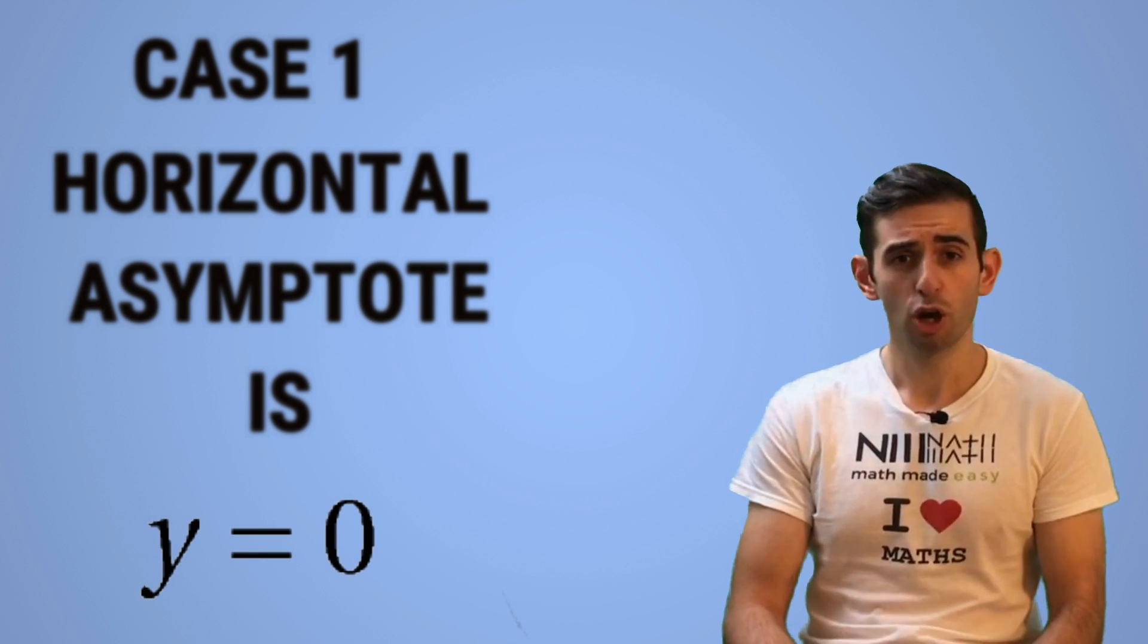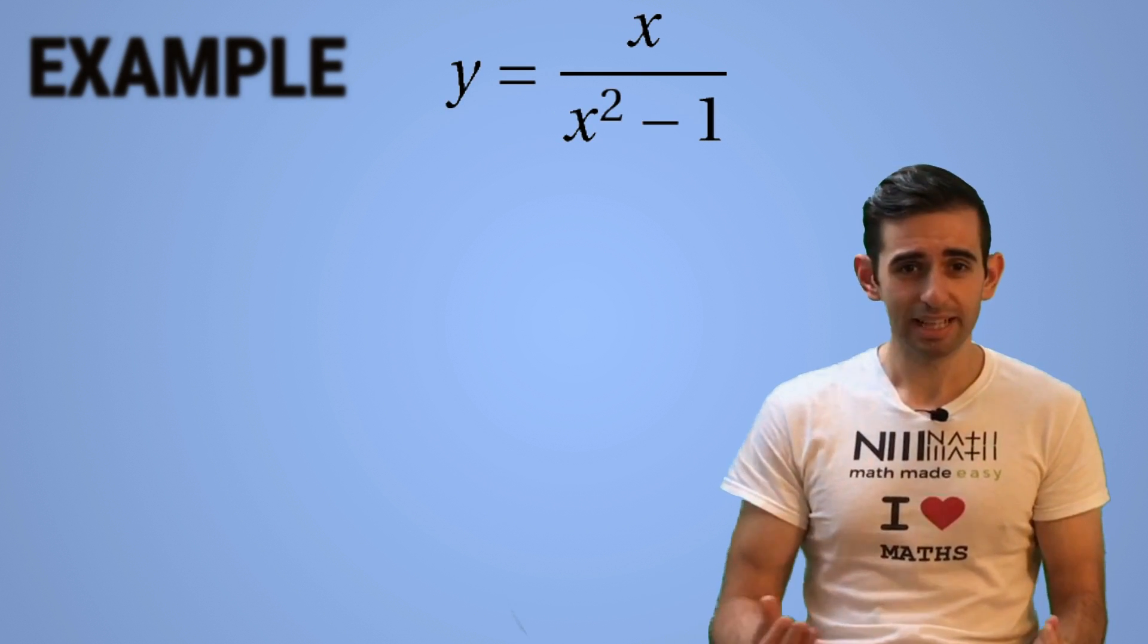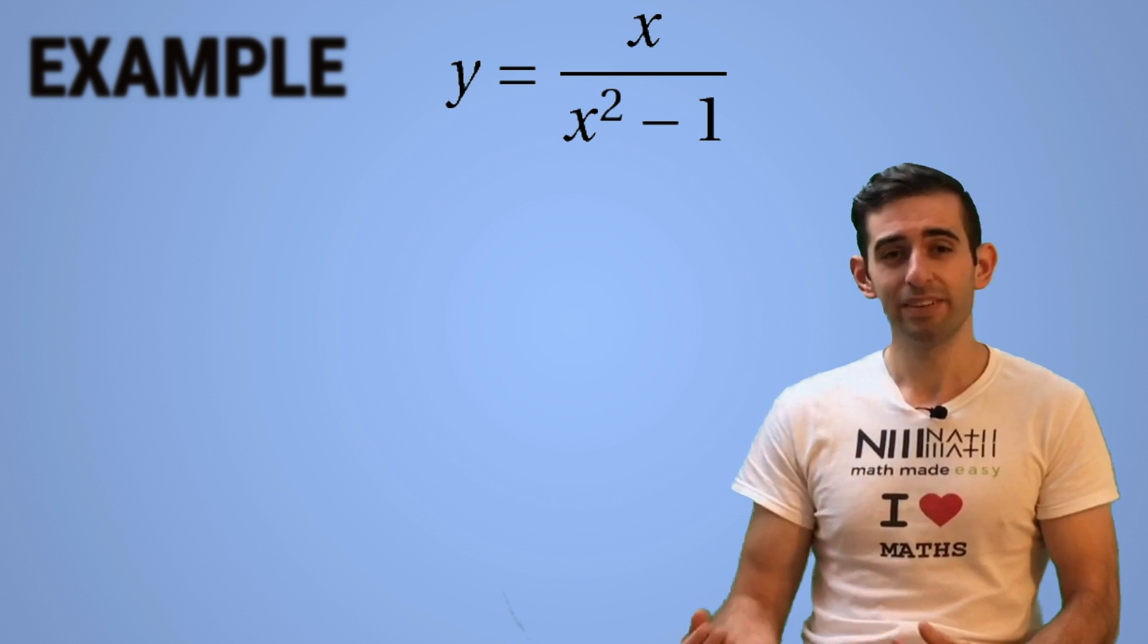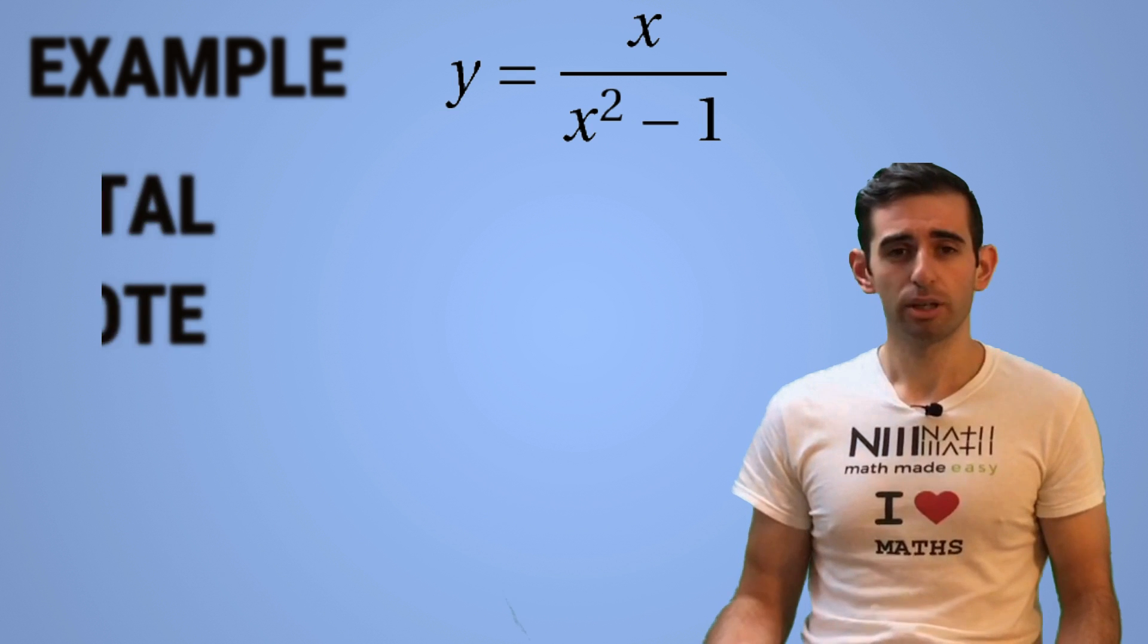So if we look at y equals x over x squared minus one, x is smaller than x squared in terms of powers, so at infinity that x will be nothing compared to x squared. So the asymptote is y equals zero.